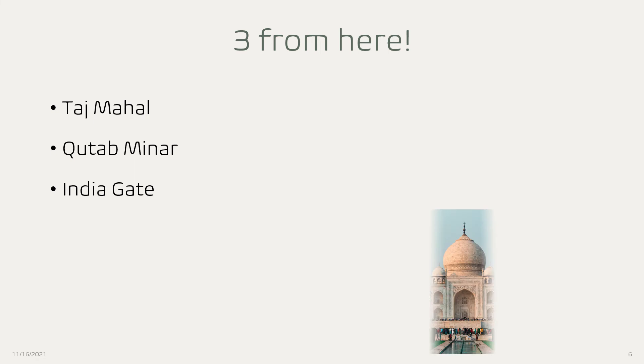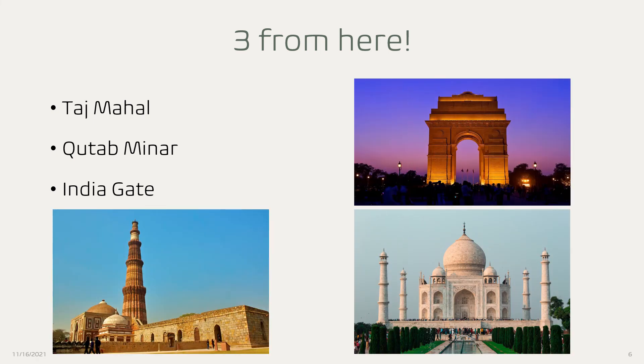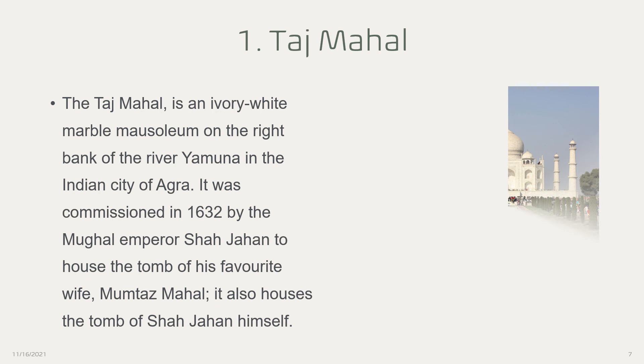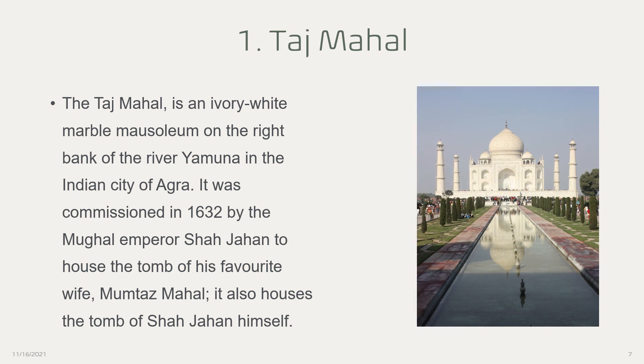The three monuments we'll cover are Taj Mahal, Qutub Minar, and India Gate. First, let's learn about the Taj Mahal — who built it and why. The Taj Mahal is an ivory-white marble mausoleum on the right bank of the river Yamuna in the Indian city of Agra. It was commissioned in 1632 by the Mughal Emperor Shah Jahan to house the tomb of his favorite wife, Mumtaz Mahal. It also houses the tomb of Shah Jahan himself.